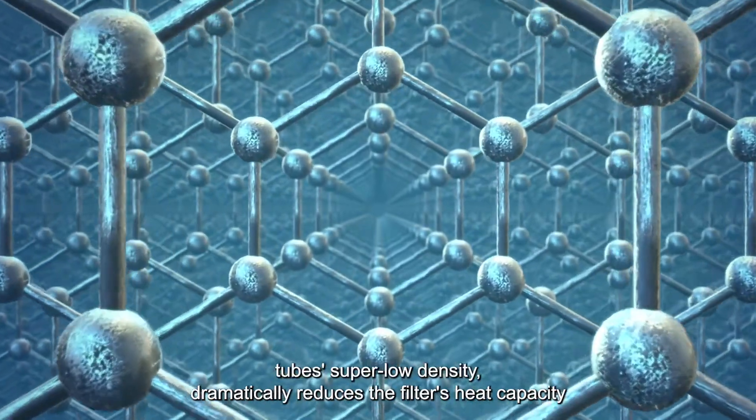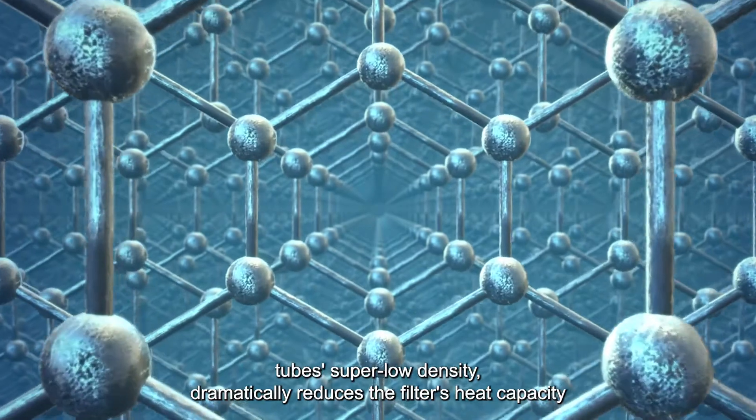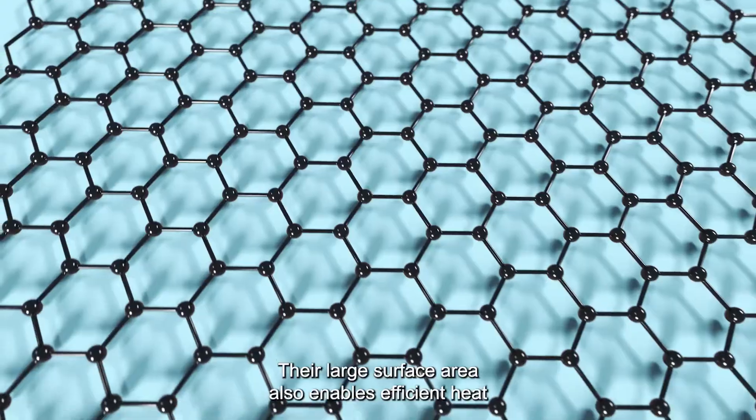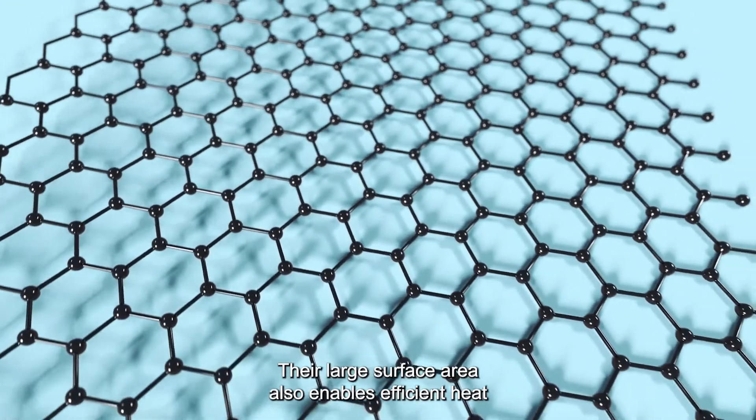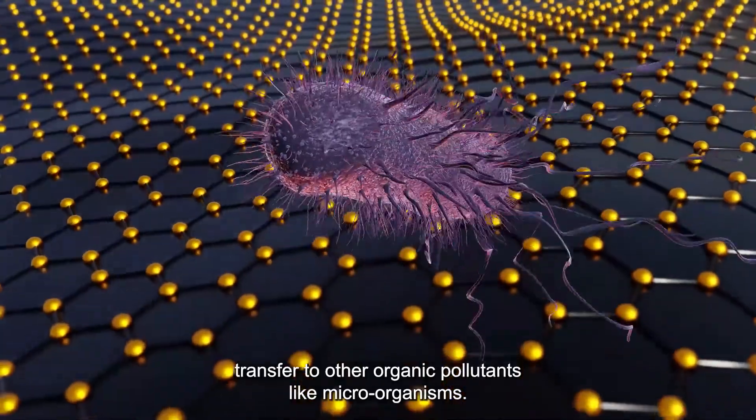Furthermore, the hollow graphene tube's super low density dramatically reduces the filter's heat capacity, meaning less energy is needed for cleaning. Their large surface area also enables efficient heat transfer to other organic pollutants, like microorganisms.